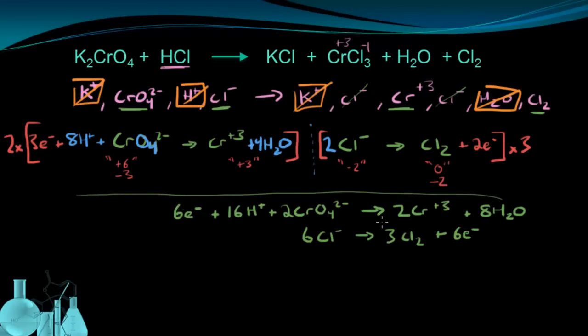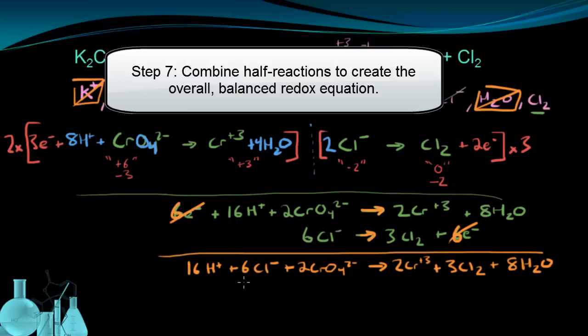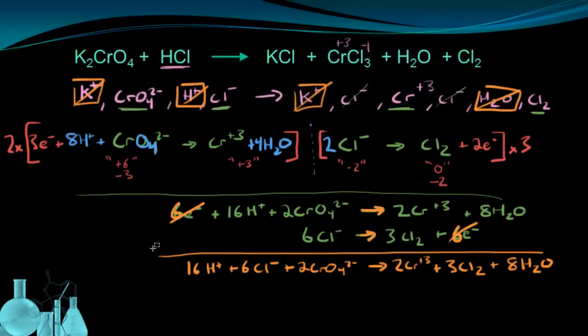I've now multiplied each half reaction by what we said we were going to multiply them by. And I've stacked them on top of each other, lining them up so that I can very easily add them into one big equation. And I can make my life a little bit easier because I know I have six electrons on the product side and on the reactant side. So I can eliminate that entirely. And then when I add these reactions together, I'm going to get 16 hydrogen ions plus 6 chlorine ions plus 2 chromate yields, 2 chromium plus 3, plus 3 chlorine gas, plus 8 waters. We now have a balanced reaction that shows the oxidation and reduction that takes place in this.